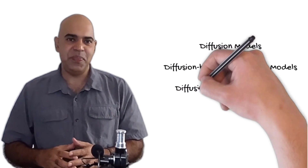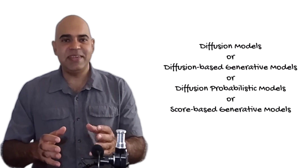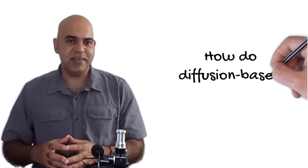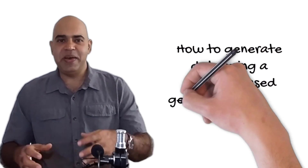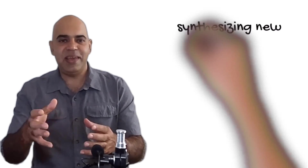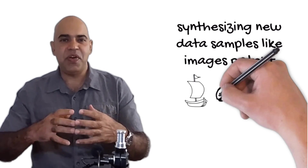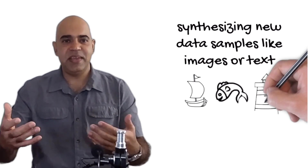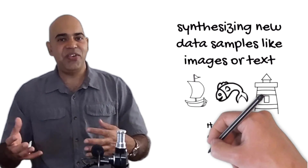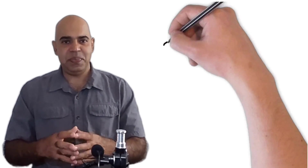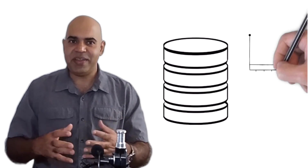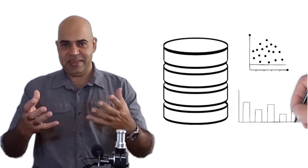In today's video, I will explain what a diffusion model is in the modern artificial intelligence domain. By the end of the video, you will understand how diffusion-based generative models work. You will also learn how to generate simple forms of data using Python. A diffusion-based generative model can be used for various tasks including synthesizing new data samples like images or text. I will generate simple data instead of complex images or text so that the complexity of the data does not get in our way of understanding the concept.